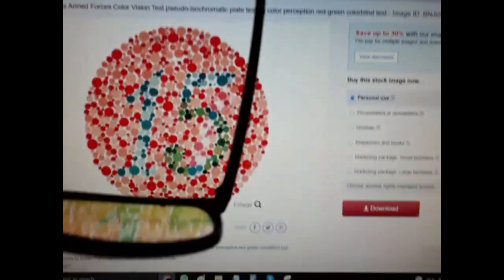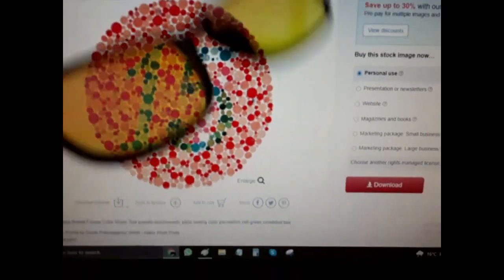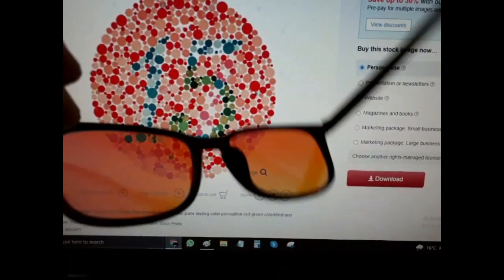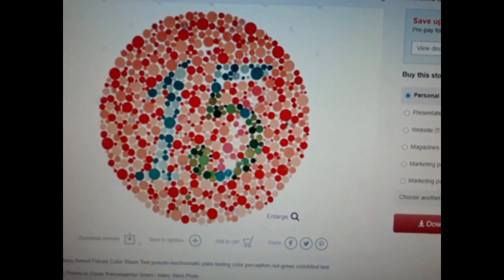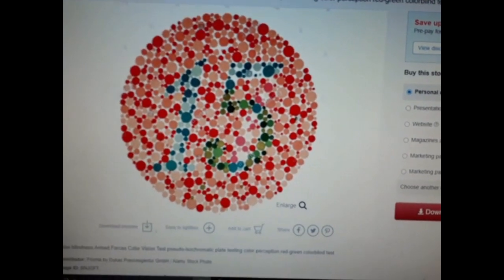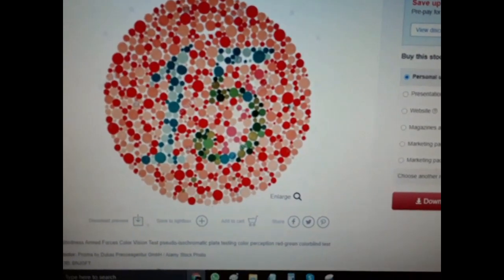I'm going to do some Ishihara tests so you can see if the lenses are suitable for you. So here's the number 15. If you're colorblind, maybe you're not seeing anything, right?